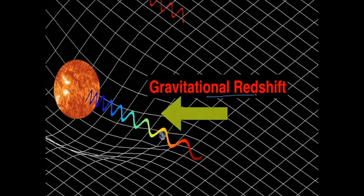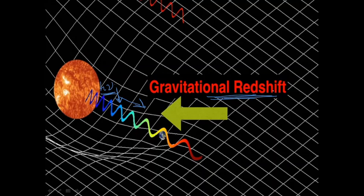Gravitational redshift is another important experimental observation. The light emitted by different stars actually changes its frequency as it moves away from the star. If a star emits light of frequency ν with energy hν, it must spend some energy to overcome the gravitational field and escape, so it loses energy and its frequency decreases — that is what happens in gravitational redshift. All these experimental observations underline how correct the general theory of relativity set by Albert Einstein is.